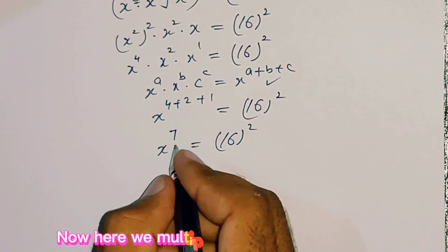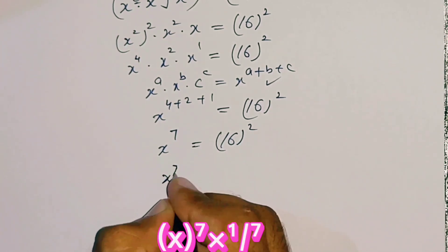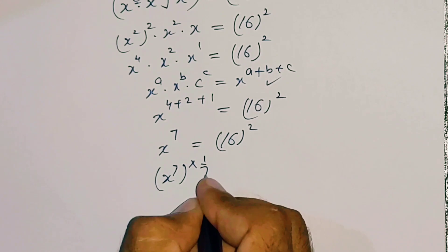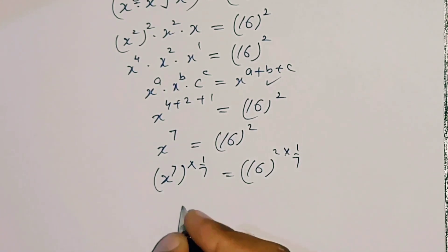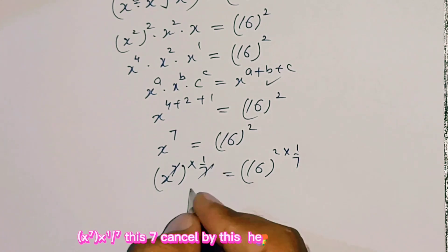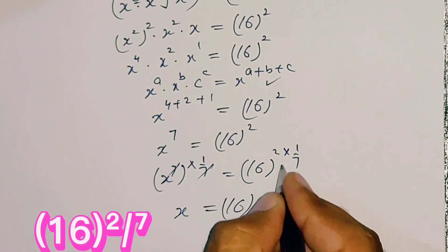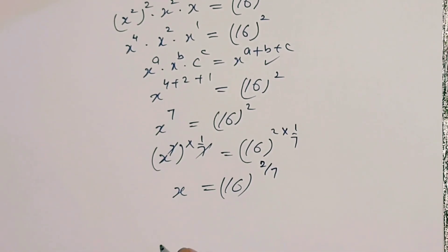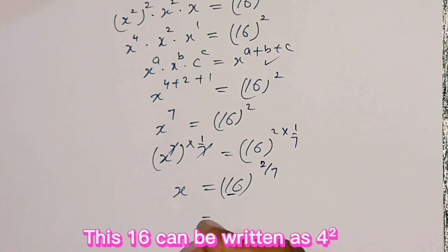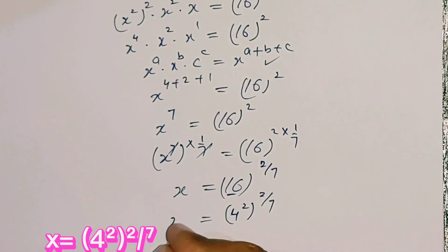Now we multiply both sides by 1 over 7. This 7 is cancelled, leaving x equals 16 power (2 times 1 over 7), which is equal to 16 power (2 over 7). This 16 can be written as 4 power 2, so x equals (4 power 2) power (2 over 7), which simplifies to x equals 4 power (4 over 7).